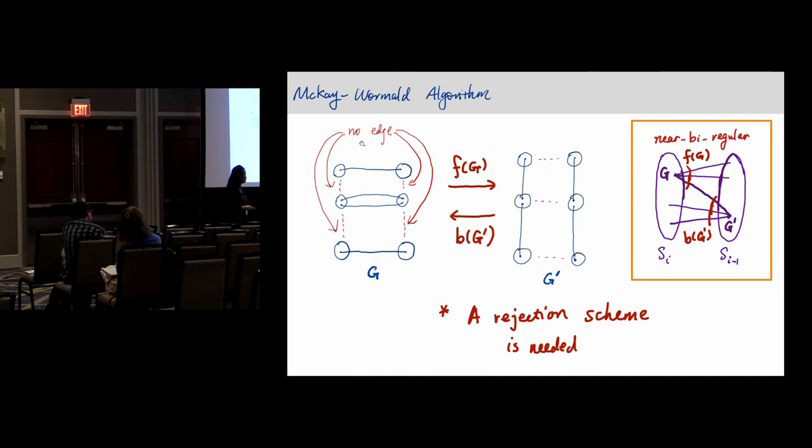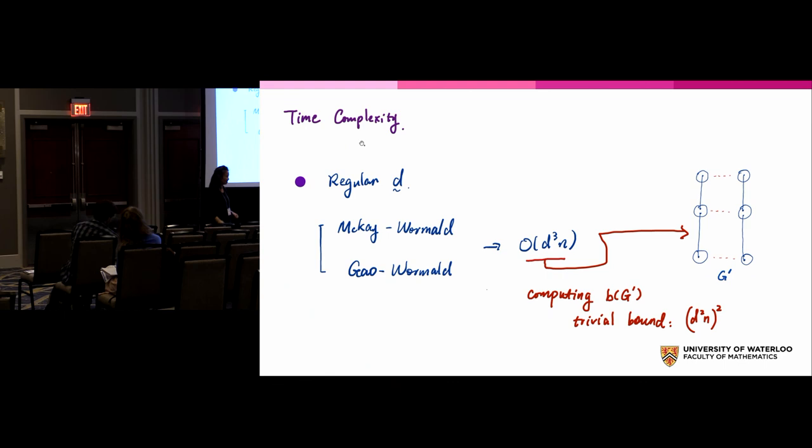In order to do this, you have to compute the degree here, which is the number of ways you can perform a switching. That explains the time complexity d cubed n here. How many ways I can perform a switching? I have to choose two pairs where they have some kind of constraints. There is no edge between them. Using a brute force search, you just go through all the pairs of double edges and you get this complexity.